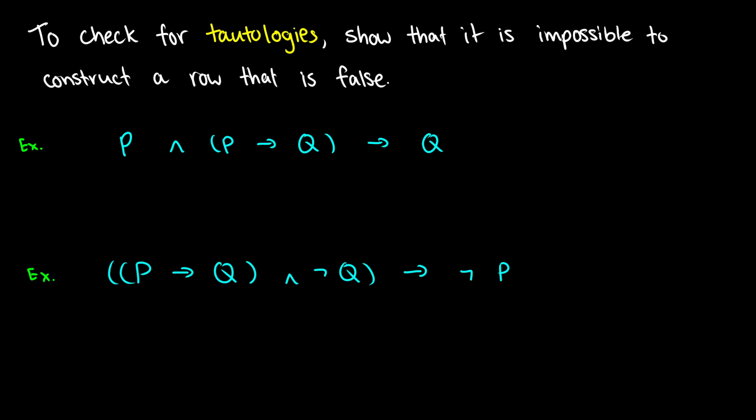So, what is a tautology? Remember, a tautology is a well-formed formula that is always true. So, if we want to check whether something is a tautology, what we can do is something a little bit trickier — we can try to make a row that is false. For instance, if I have p ∧ (p→q) → q, here's the main connective: it's the arrow before q. So, what if we just tried to create a row that was false? And if it's impossible to create that row, then it's impossible to have a row that's false, therefore every row must be true. So, if this is impossible, we know it's a tautology.